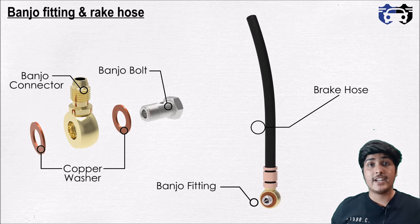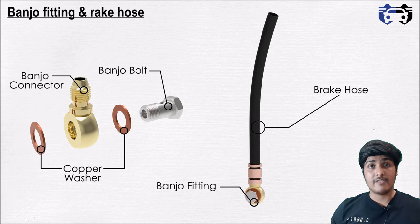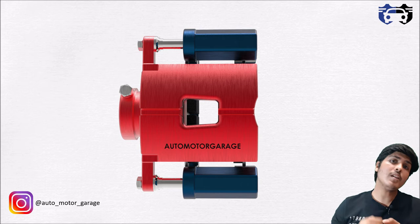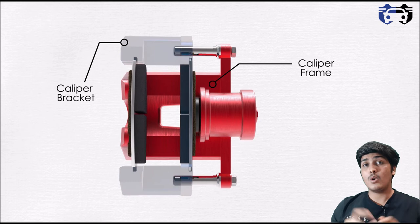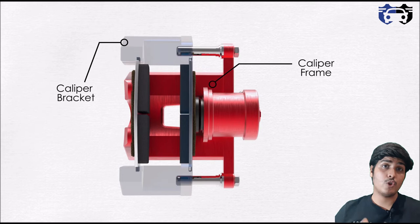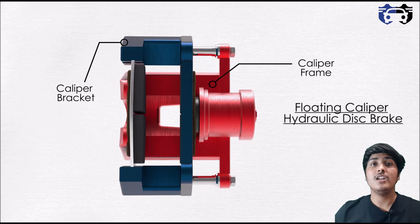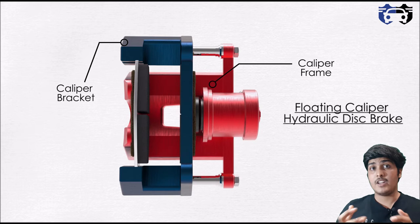The third component is the banjo fitting and brake hoses, which transfer pressurized fluid into the caliper frame to push the piston. An important point to note: the blue caliper bracket is stationary and mounted on the knuckle, while the red caliper frame is free to slide over the fixed bracket on the slider pins. Because the caliper frame can slide or float on the slider pins, this type is called a floating caliper, and the assembly is called the floating caliper hydraulic disc brake.